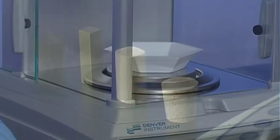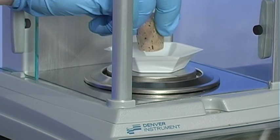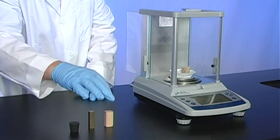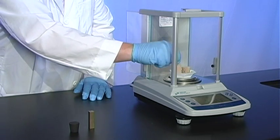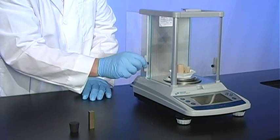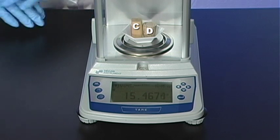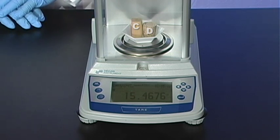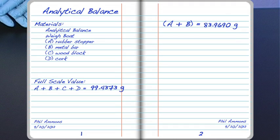Weigh items C and D together. The combined mass is 15.4676 grams. Record this value in your lab notebook.